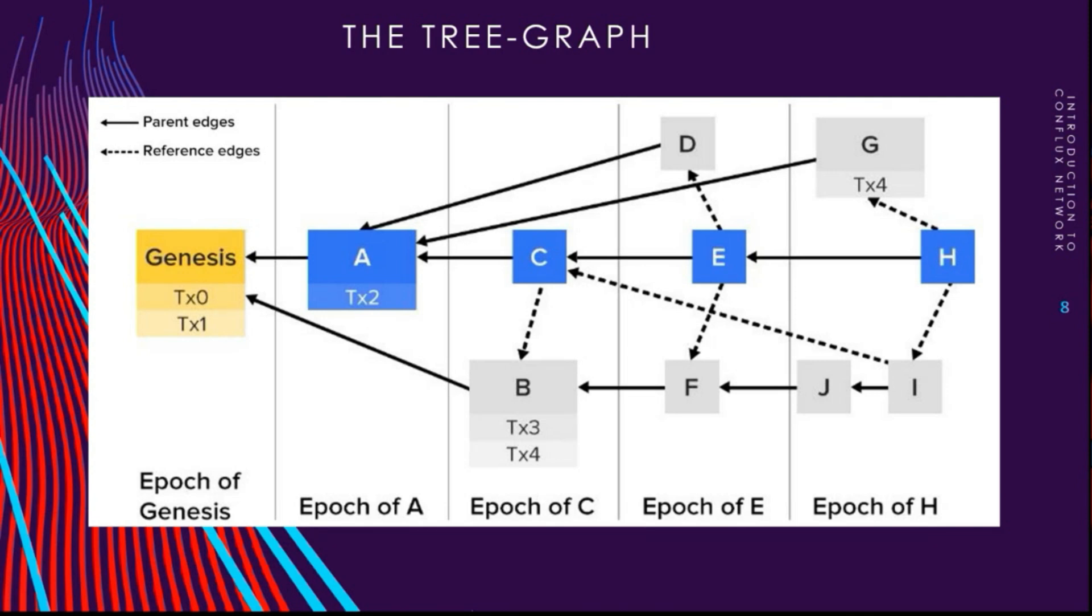You can see that each block here on the chart has parent edges and reference edges. Having this list of references to previous blocks provides very valuable information about the order in which blocks are created. When transactions come into play, Conflux employs the GHAST rule to choose the pivot chain.